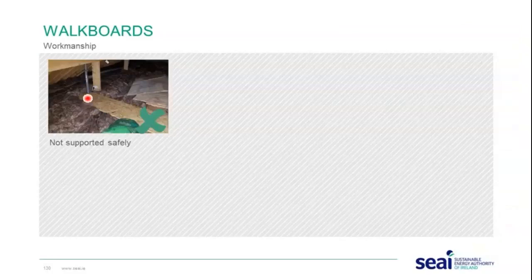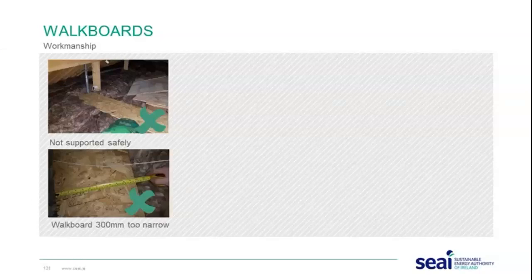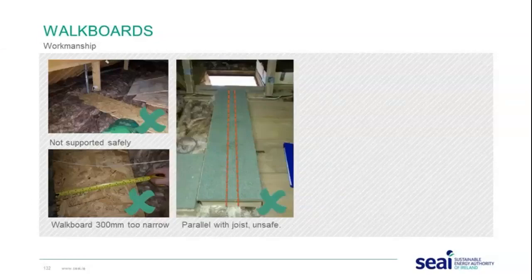In that example the walk board was 300 millimetres wide — too narrow — and was installed parallel with the joist, creating a risk of wobbling from side to side. The walk board should be installed across the joists in a safe manner. The correct approach is to have the walk board at the correct width, supported and fixed to the joist, and accessing the full area of the tank.